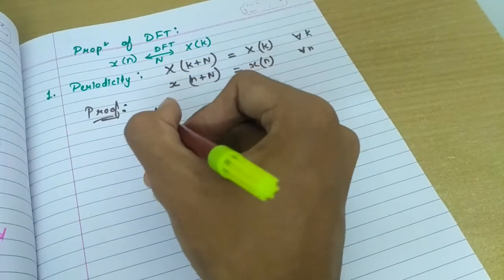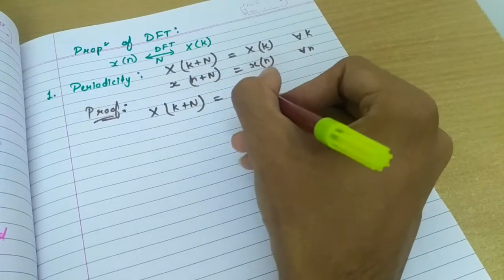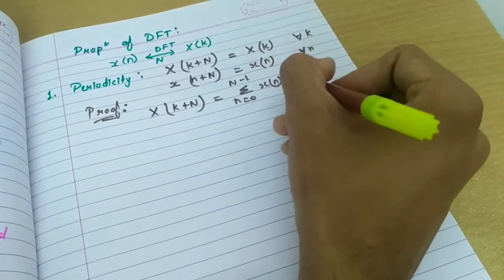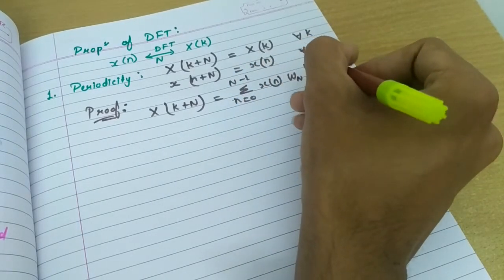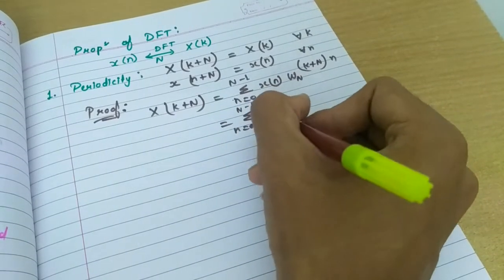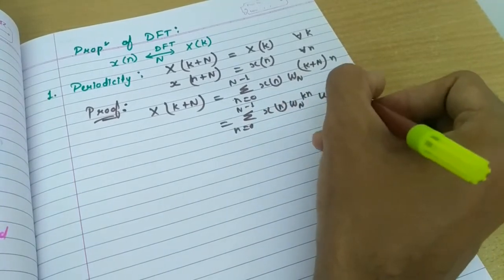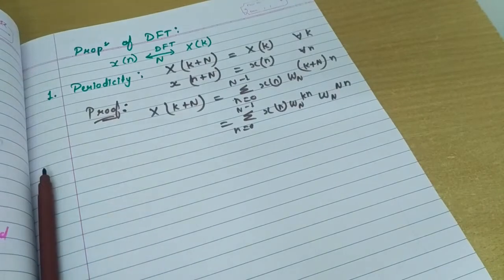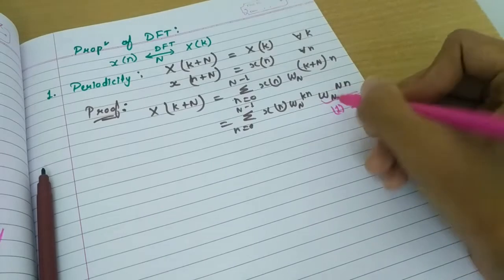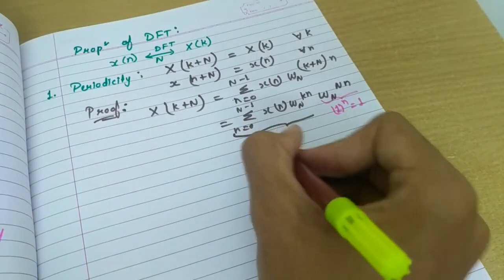So, just substituting X of k plus n. What we will get? 0 to n minus 1. X of n. W n raise to k plus n raise to n. It is nothing but 1 only. So, this whole term is 1. So, we are left with this term and this is nothing but X of k.